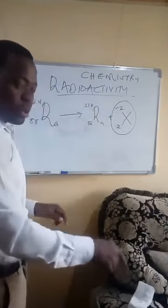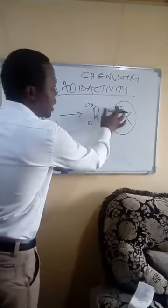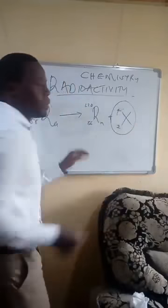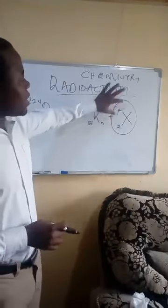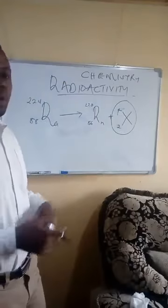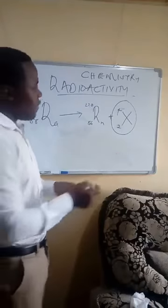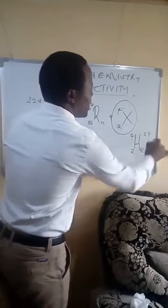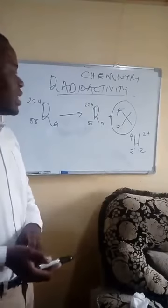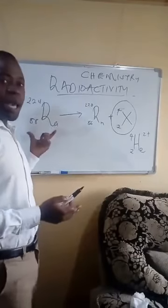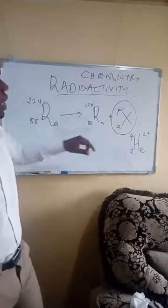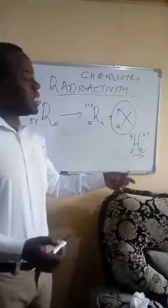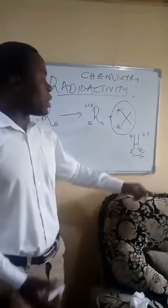The particle whose mass number is 4 and atomic number is 2 is obviously alpha — that is helium — and therefore this is what I'm going to put there. We say that it carries a positive 2 charge. So the kind of radiation that our nuclide undergoes here is alpha decay, and the particles released carry a positive charge. This is a stream of positively charged ions of helium.